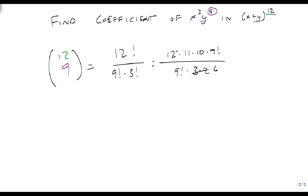Which is 6, which is 22 times 10, which is 210. So the coefficient of the x cubed y to the 9th term is 210, so there's a term 210 x cubed y to the 9th. And we have successfully found our coefficient.